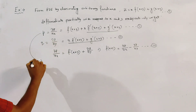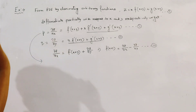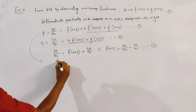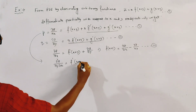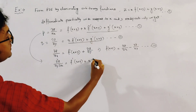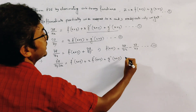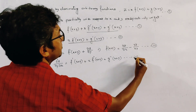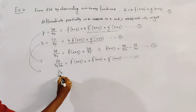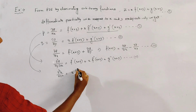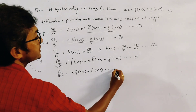We again differentiate relation 2 with respect to y, and get del²z by del y del x equal to f dash (x plus y) plus x into f double dash (x plus y) plus g double dash (x plus y). This is relation 5. From relation 3, differentiating with respect to y, we get del²z by del y² equal to x into f double dash (x plus y) plus g double dash (x plus y). This is relation 6.